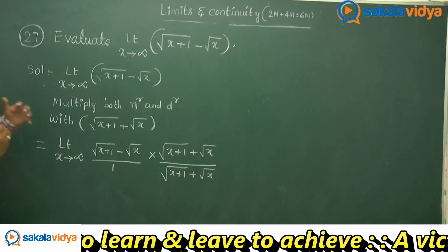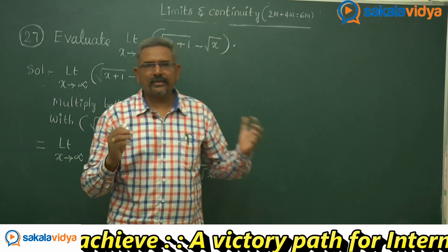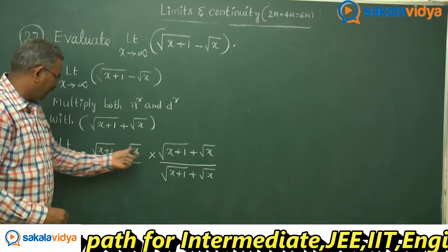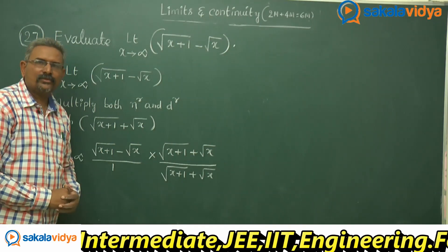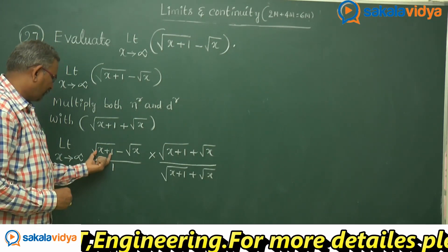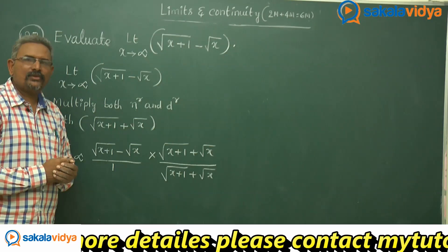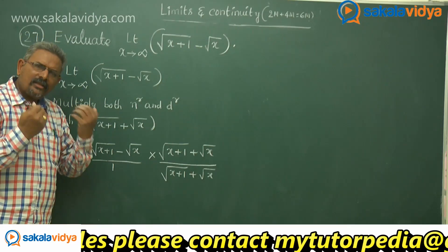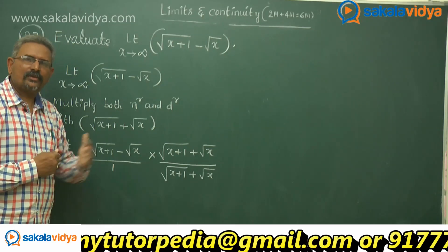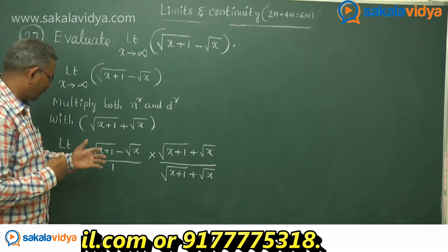Now how to simplify the numerator? Just observe: the numerator will be in the form of a minus b times a plus b. If we assign root of x plus 1 as a and root x as b, we have a minus b times a plus b, which gives a squared minus b squared.